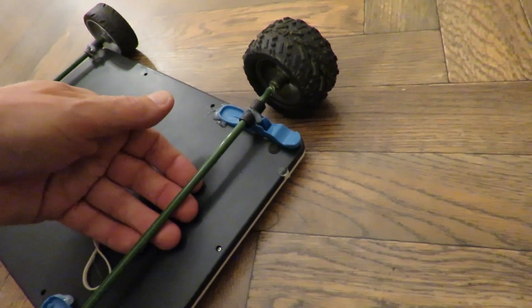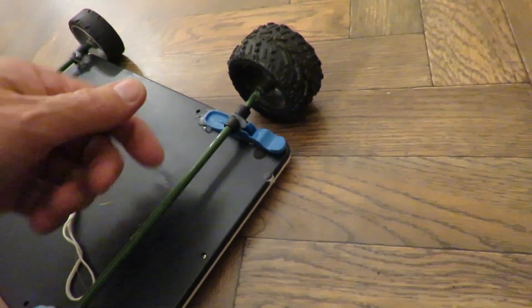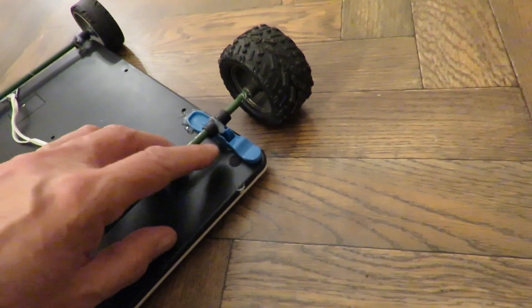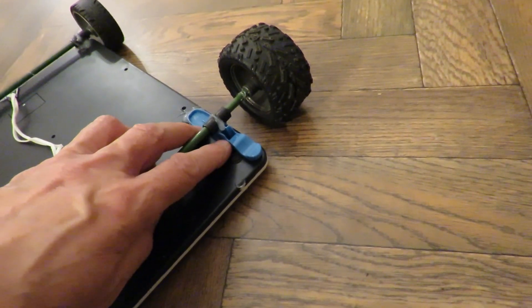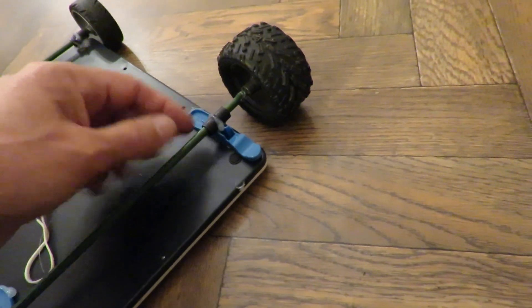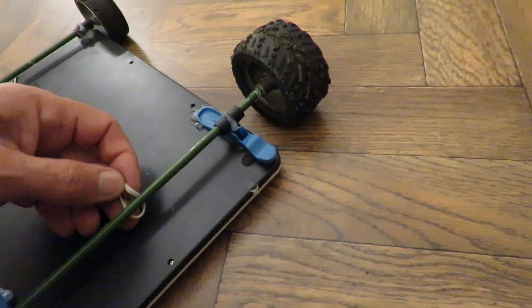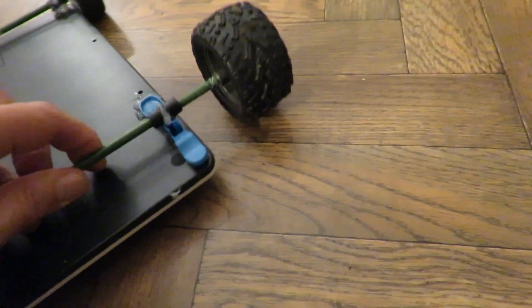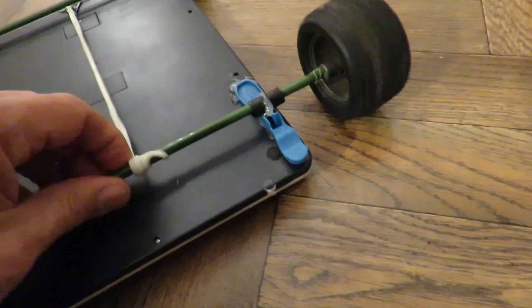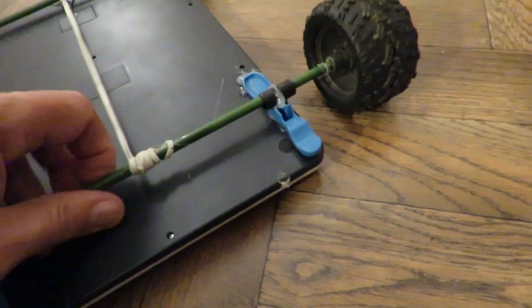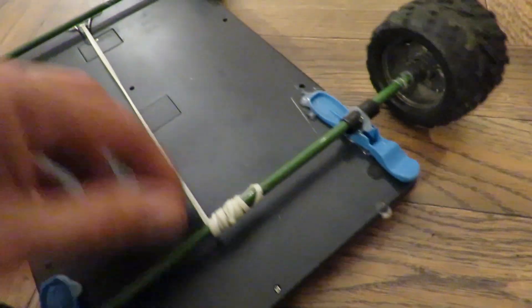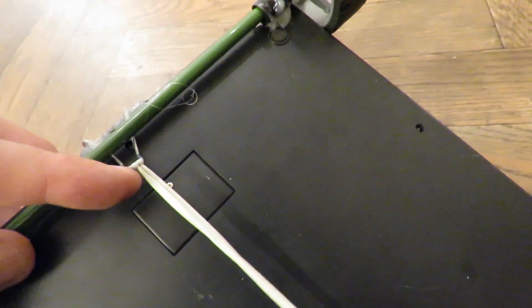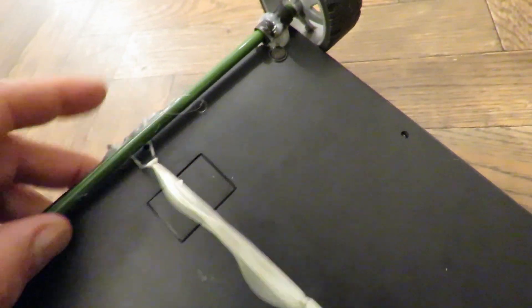And then to lift the axle away from the bodywork, I've used a couple of bits of clothes pegs, plastic clothes pegs, just to give it that bit of height so that when the rubber band wraps up around it and builds up a bit of a bulge in the rubber, it doesn't rub against the bodywork. Oh, and at the other end, a bit of bent wire to attach the rubber band to.